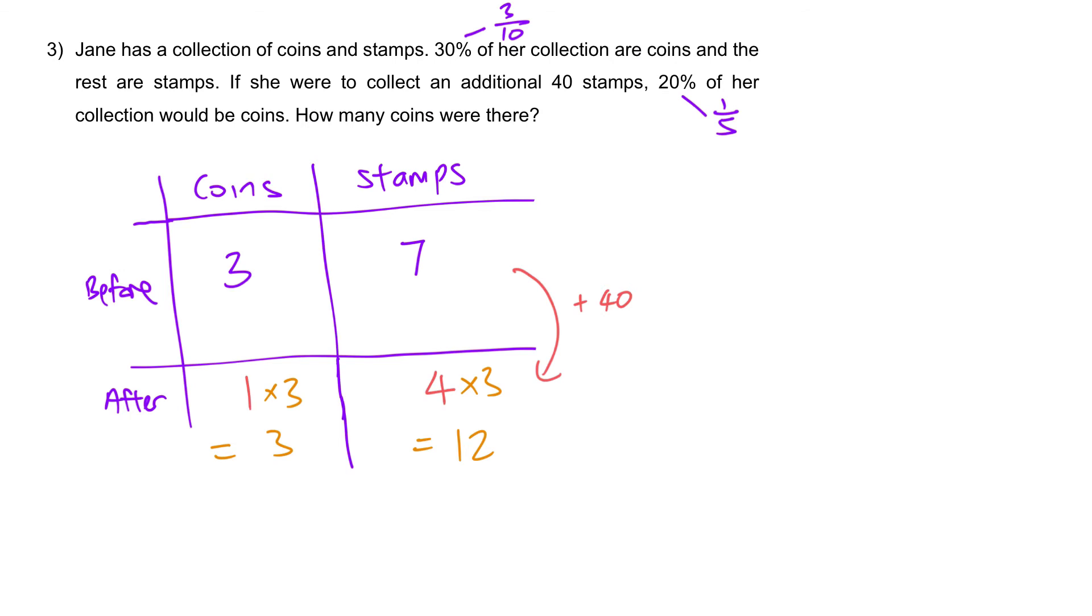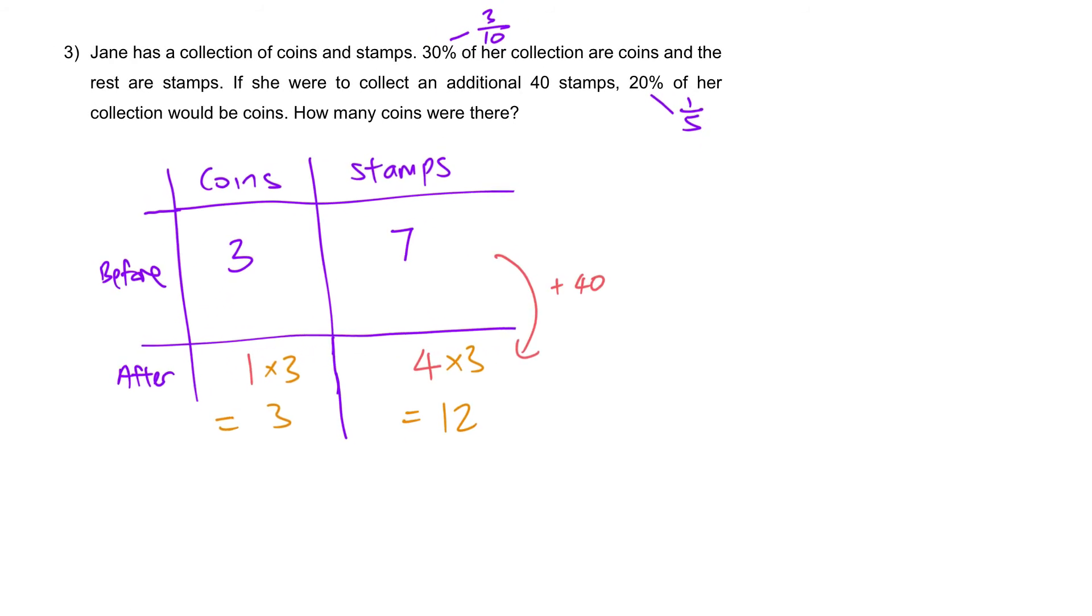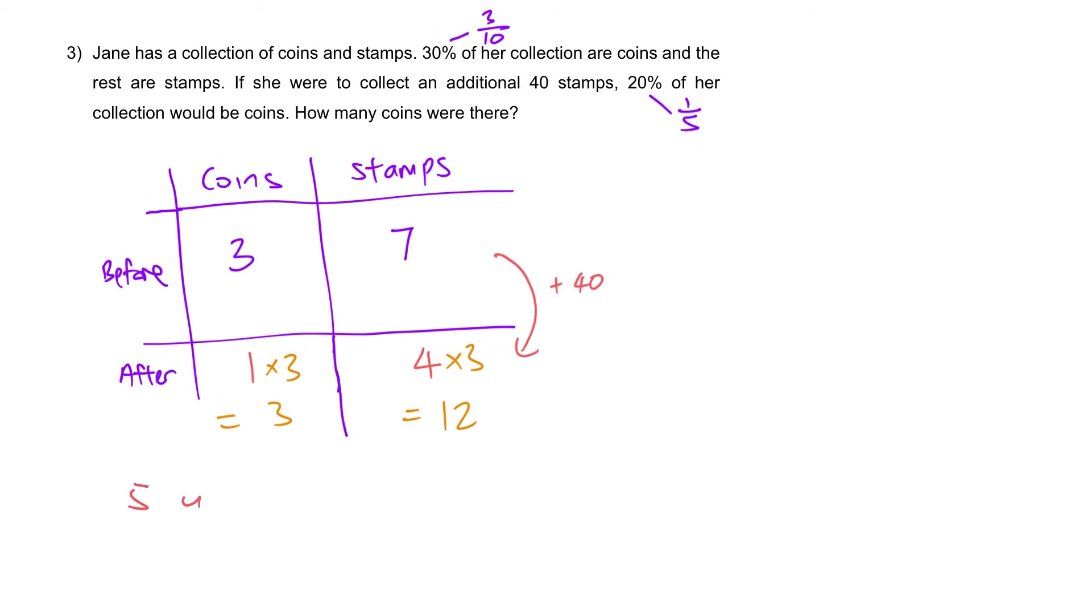Let's look at the stamps. Initially, 7 units. After receiving 40 stamps, it became 12 units. We can say that the increase of 5 units must be due to the 40 stamps. So step 1. 5 units is equal to 40 stamps. 1 unit will be 40 divided by 5, and that will give us 8. Every unit is 8 stamps.